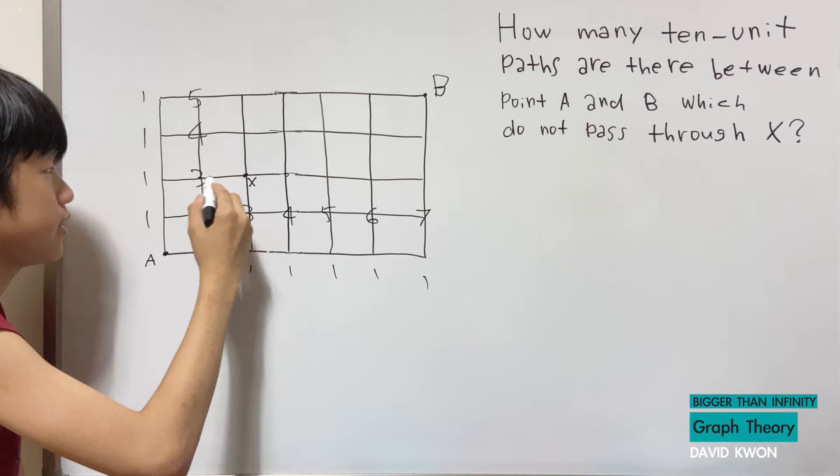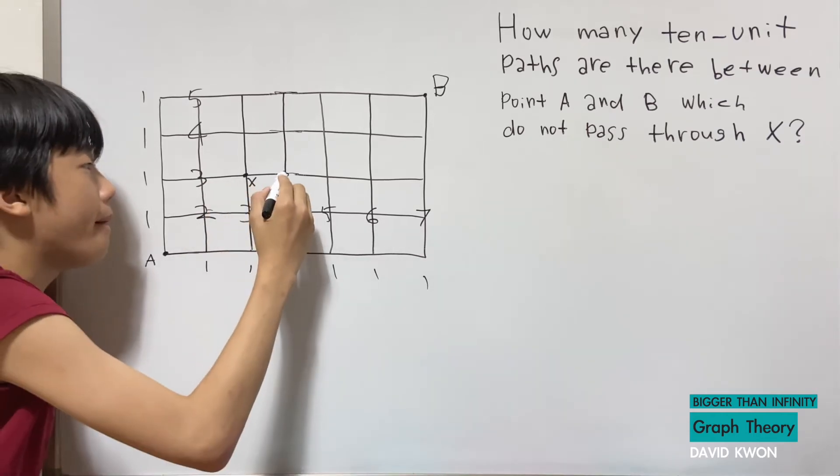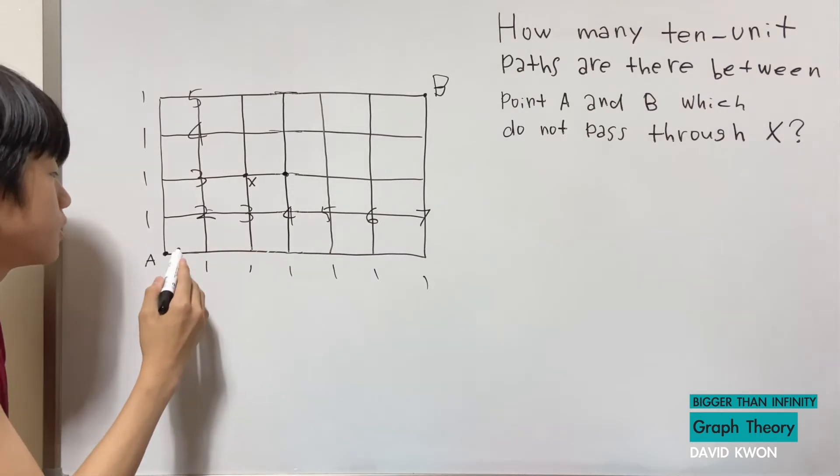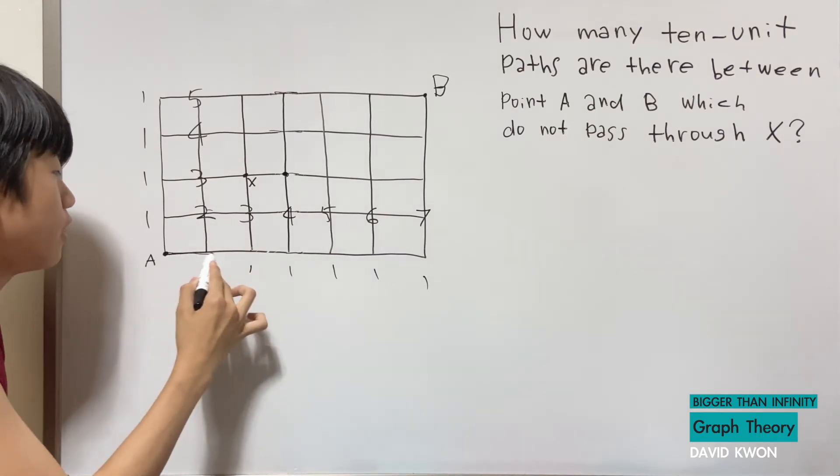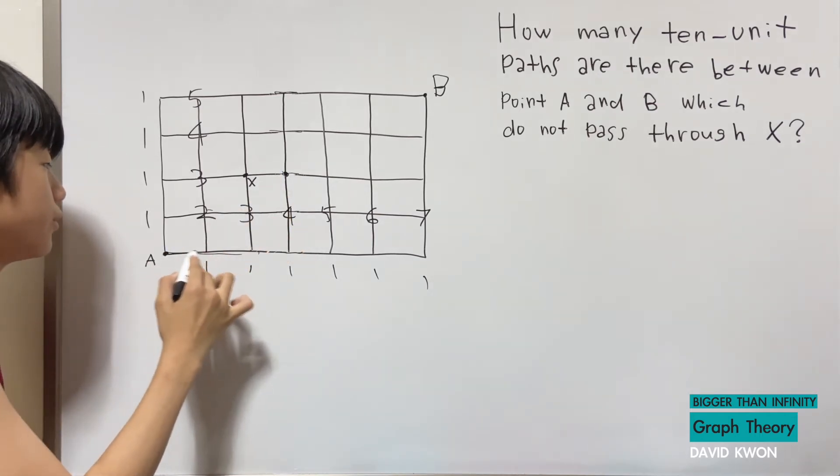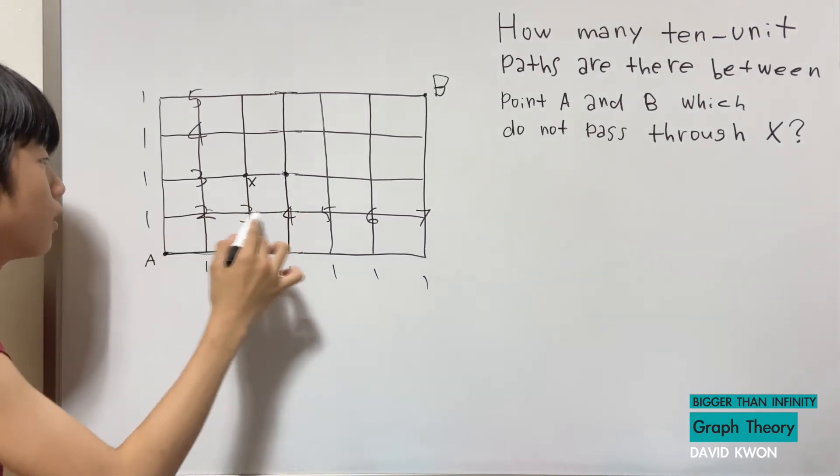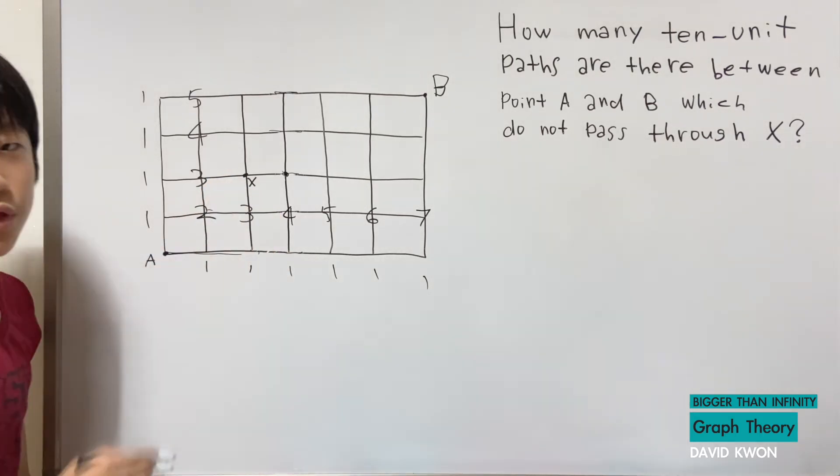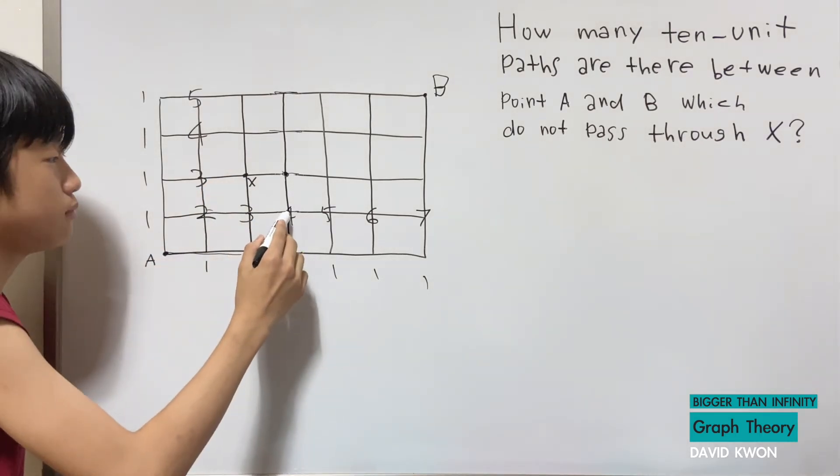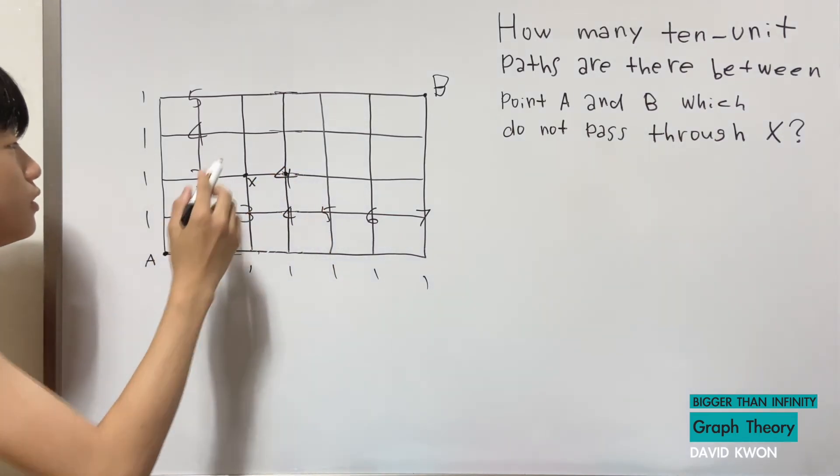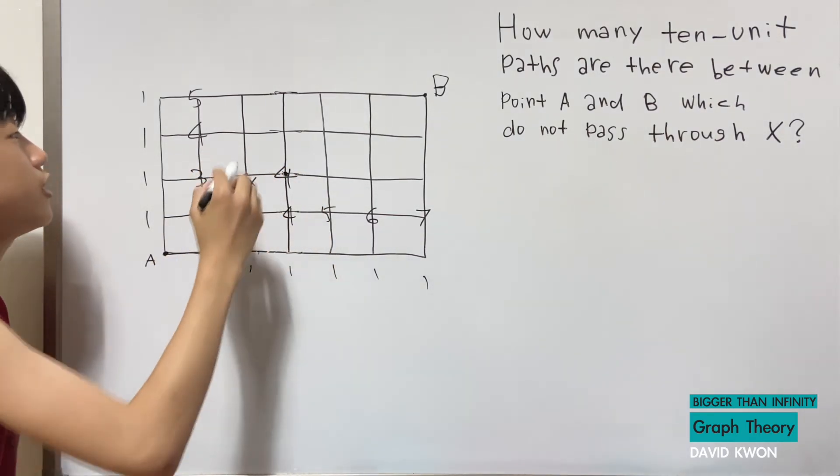So we cannot go through X, so this way is not allowed. And at this point there is only four ways because we have one, two, three, and four, or just that right here we don't have a number so we just put a number that is just from here which is four.